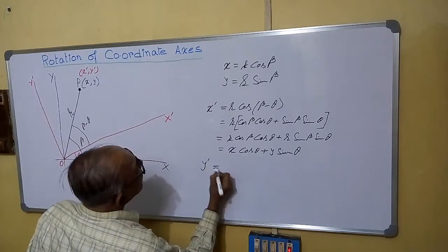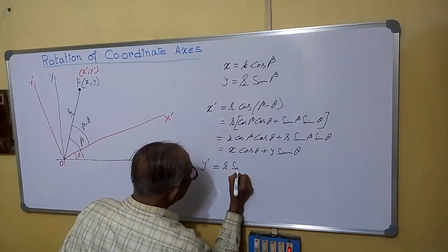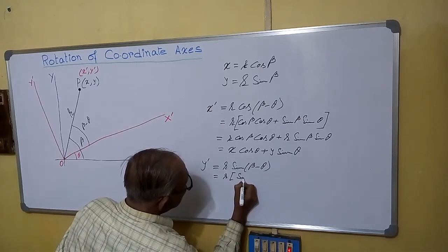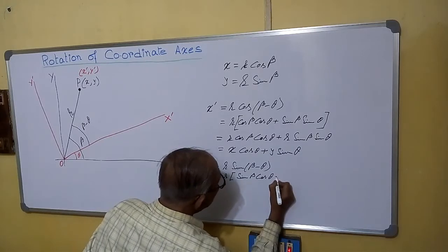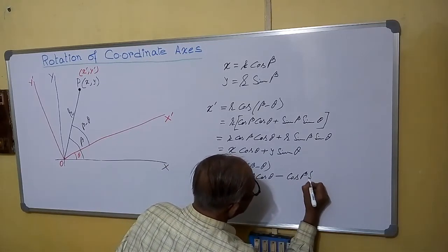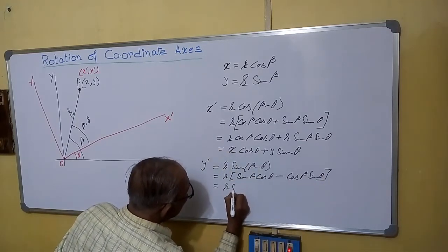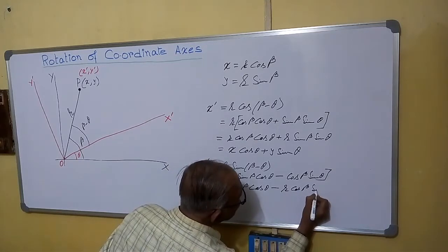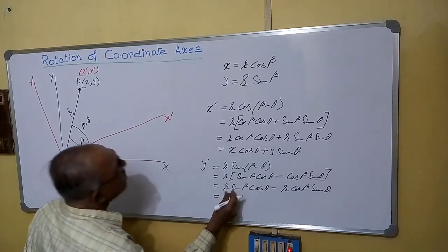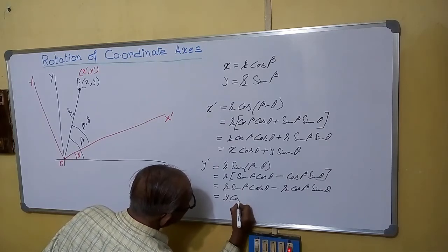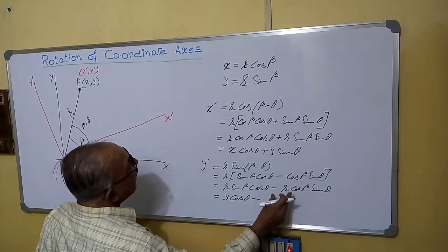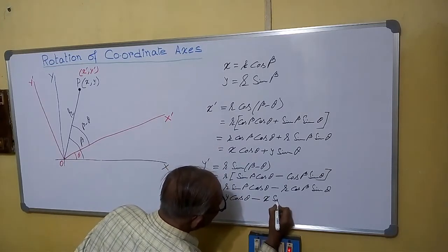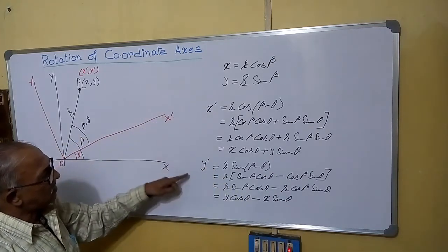What will be y-dash? y-dash equals r sin(beta minus theta). Expanding using sin(A minus B): this equals r sin(beta)cos(theta) minus r cos(beta)sin(theta). Now r sin(beta) is y and r cos(beta) is x. So y-dash equals y cos(theta) minus x sin(theta). In this way we are getting x-dash and y-dash.